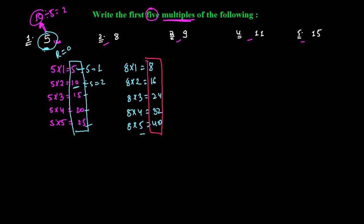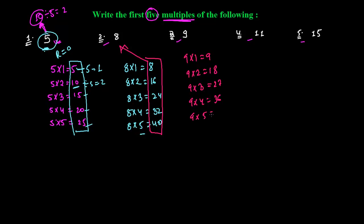For multiples of 9: 9×1=9, so 9 is the first multiple of 9 — the number itself. 9×2=18, so 18 is the second multiple of 9. 9×3=27, so 27 is the third multiple of 9. 9×4=36, so 36 is the fourth multiple of 9.